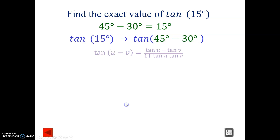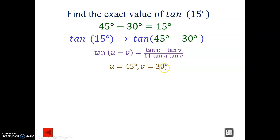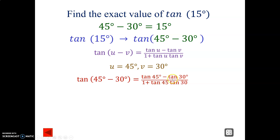So we'll be using the difference formula — tan U minus tan V on the top because of the original subtraction, and addition on the bottom. In this case, U will be 45 and V will be 30. So we'll just substitute everything in: U is 45, V is 30, giving us tan 45 and tan 30.